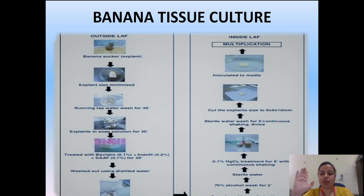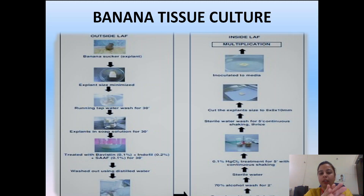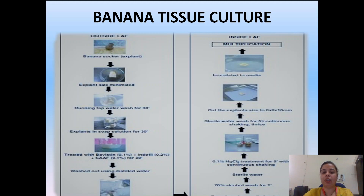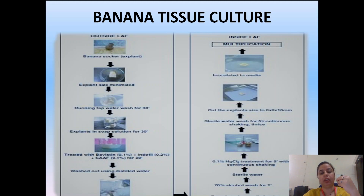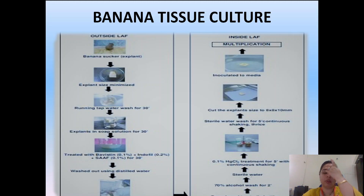Finally, after shaking, a final wash with sterile water is given. A uniform size of the explant is maintained — the final size is 8 × 8 × 10 mm. As seen in the picture, the explant is then inoculated in the plant tissue culture medium and allowed to remain for multiplication or callus formation. This may take 7 to 10 days for the initiation stage, two weeks for callus culture, and around 30 days for proper root formation.